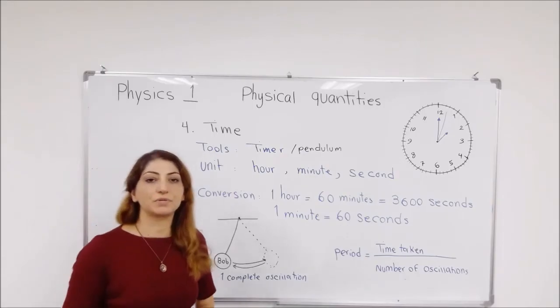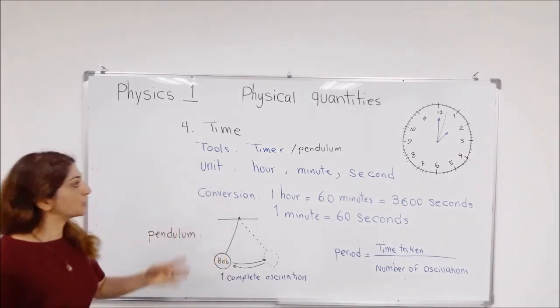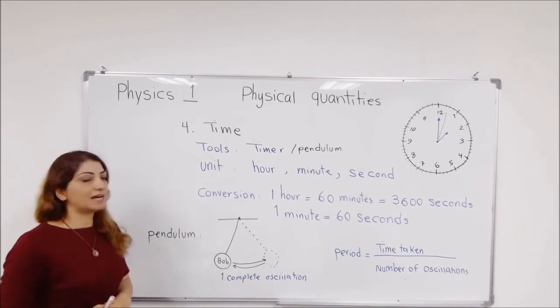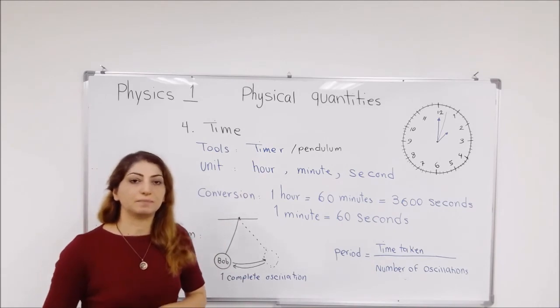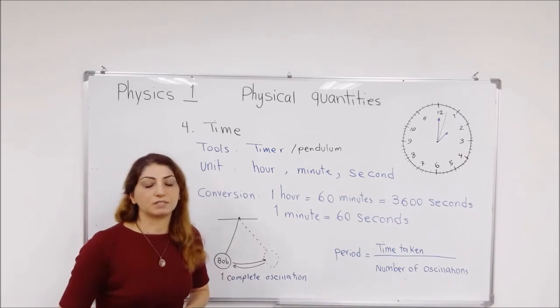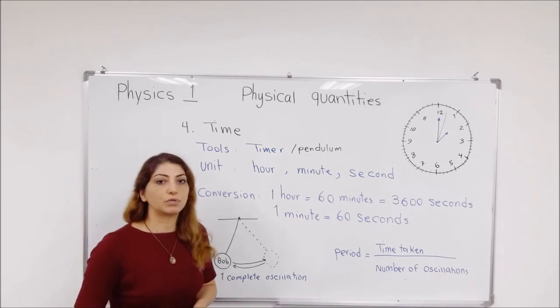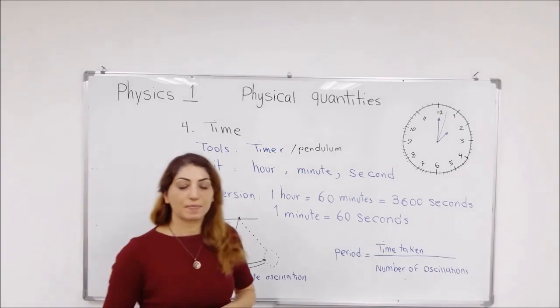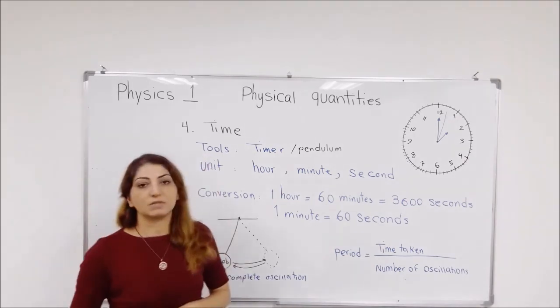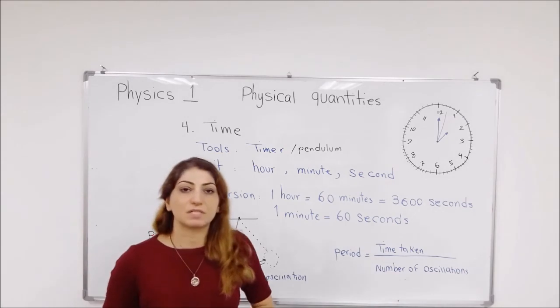All of you know how to measure time and how to calculate it. So in order to measure time, we have some tools like timer, clock, stopwatch, or pendulum. The unit of time is hour. It can be hour, which is equal to 60 minutes, and it can be also seconds. Each one minute is equal to 60 seconds. So overall, each one hour will be equal to 3,600 seconds.